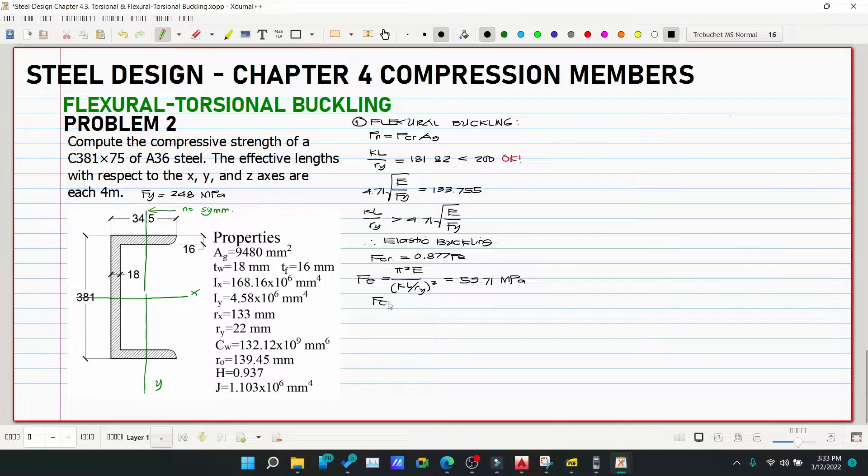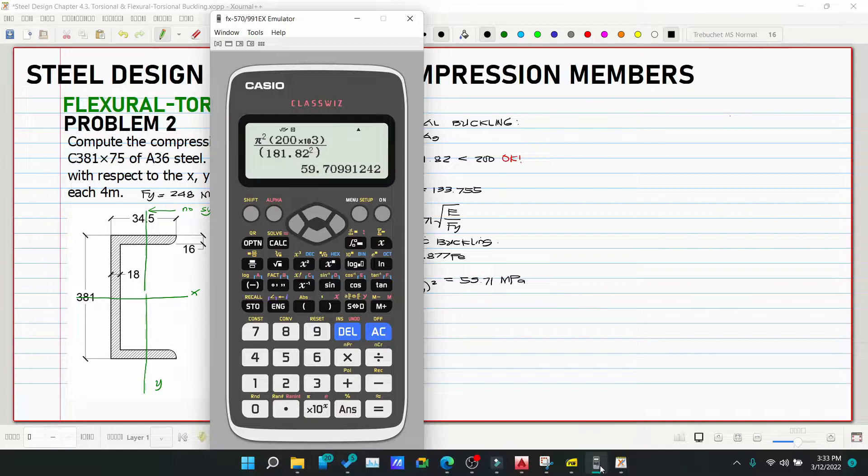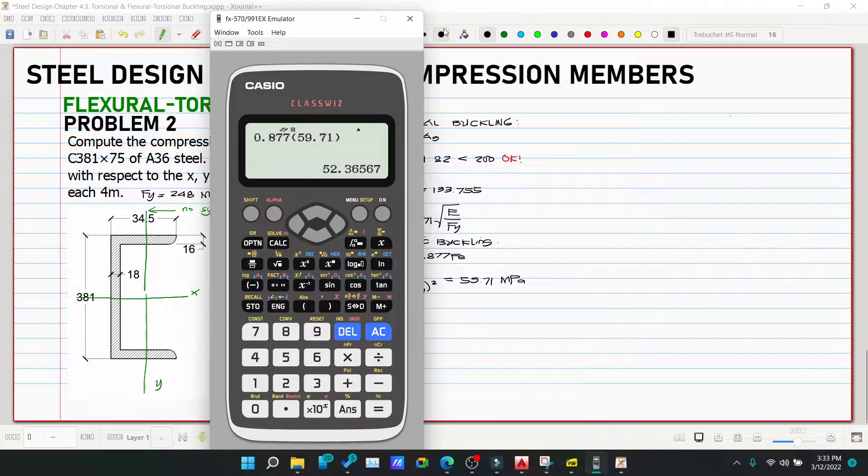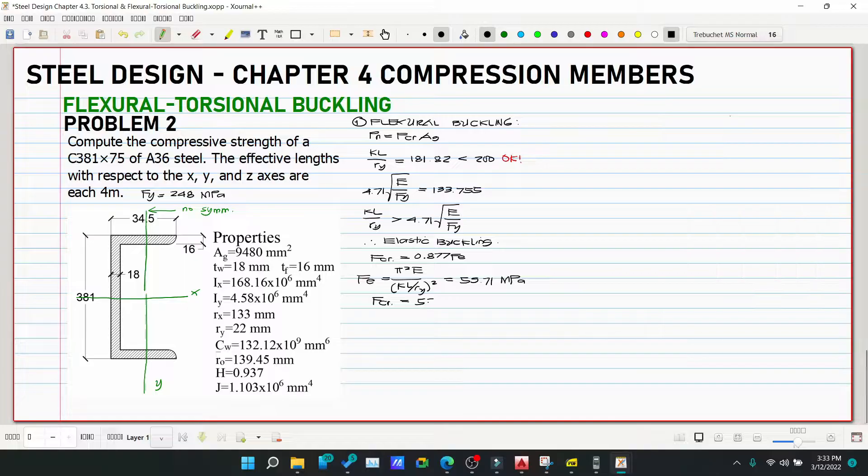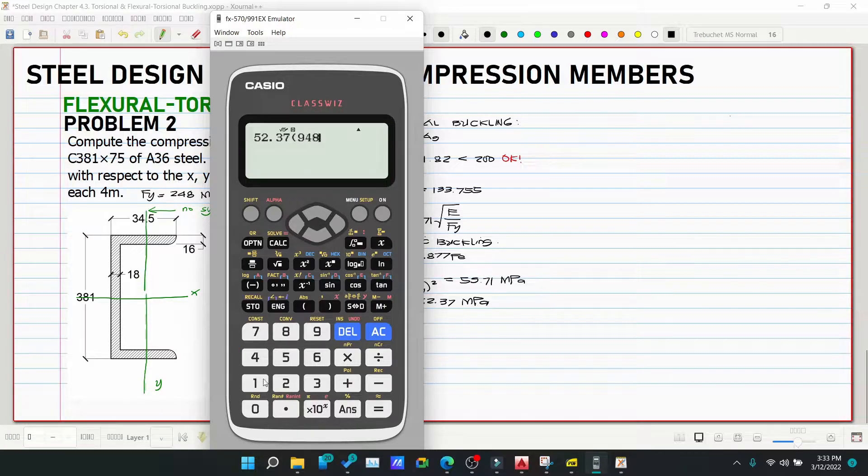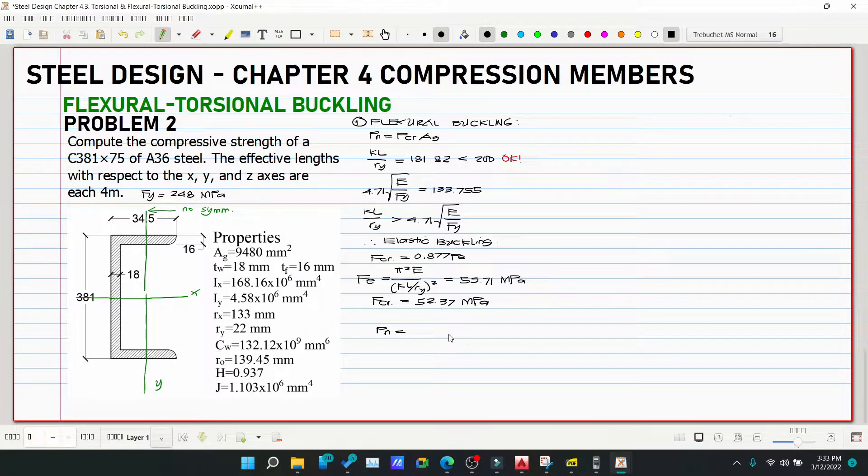So our Fcr is 0.877 × 59.71 = 52.37 megapascals. Then we can solve our Pn which is 52.37 × 9480 / 1000 = 496.47 kilonewtons. This will be our Pn sub 1.